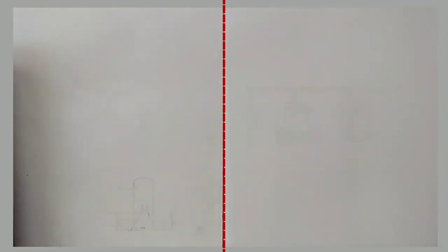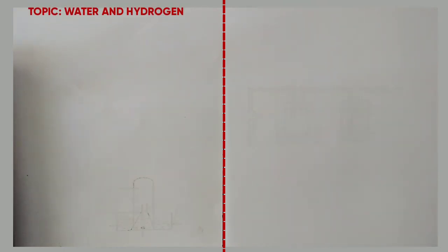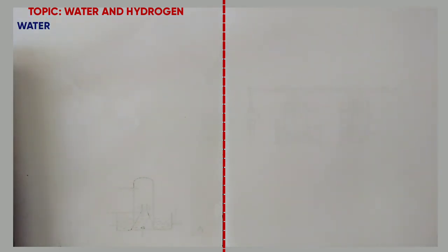Welcome learners. In this lesson we are going to look at water and hydrogen. We start by looking at water. Now in water, we are supposed to know three things: sources of water, reaction of metals to water, and reaction of metals to steam. So the first is sources of water.